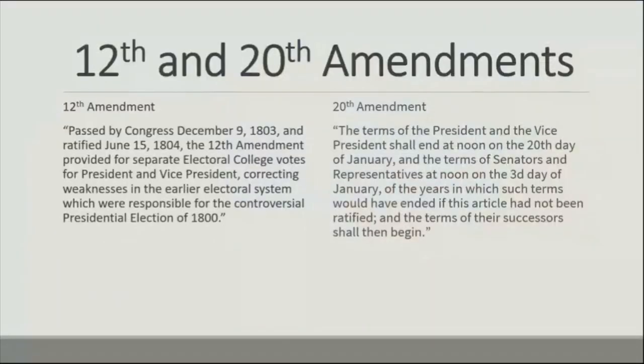There have been a few amendments that changed the process of presidential elections. The 12th Amendment separated presidential and vice presidential electoral college votes to prevent ties like what happened in the election of 1800. The 20th Amendment shortened the lame duck time — the time between the election and when a president is sworn into office — moving that date from March 4th to January 20th. Herbert Hoover was the last president to be sworn in on March 4th.